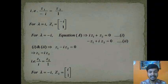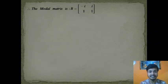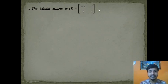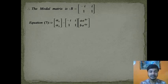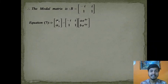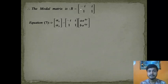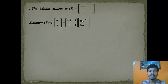This completes step 3. The modal matrix B, formed from the eigenvectors as columns, is [−i, i; 1, 1]. Now we apply the solution of the matrix form: X = B · [ae^(λ₁t), be^(λ₂t)]ᵀ. Substituting the modal matrix and solving, we get α₁ = −i·a·e^(it) + i·b·e^(−it).